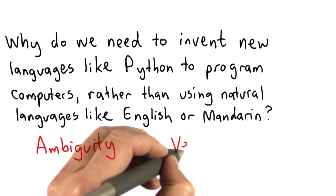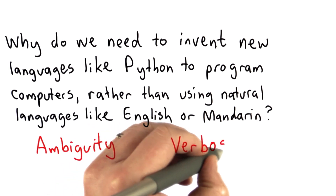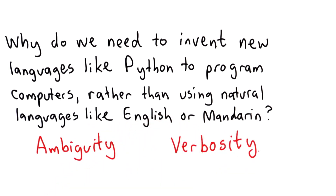Another reason we don't use natural languages for programming is that they're actually very verbose. To write a program, we need to describe exactly what the computer should do in a very precise sequence of steps. If we had to describe all those details using a natural language, that would require a huge amount of text. With a programming language like Python, we only need a few lines of code to describe something complicated in a very precise, step-by-step way. Think about how much more detail you'd need to describe in English precisely what we can express with just a few lines of Python code.